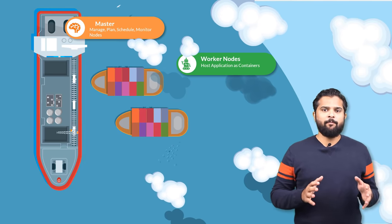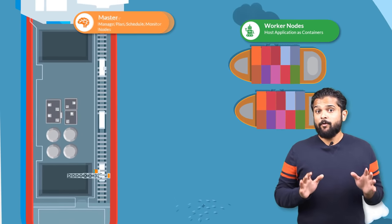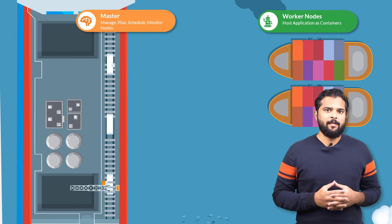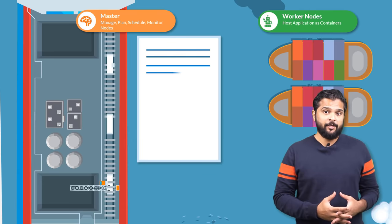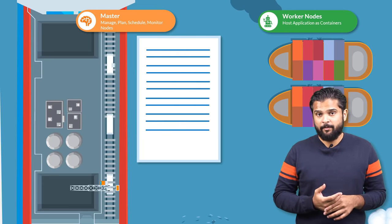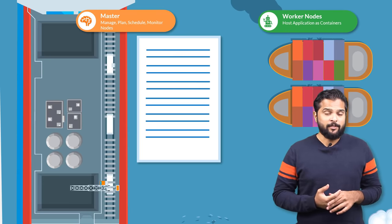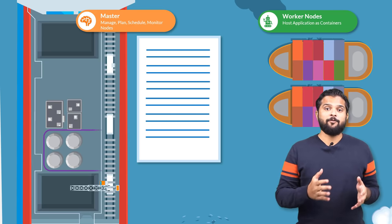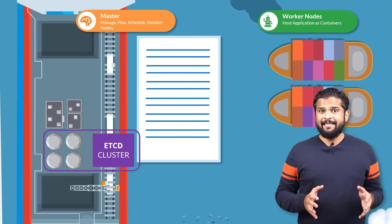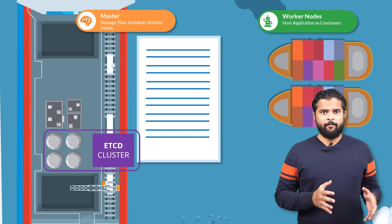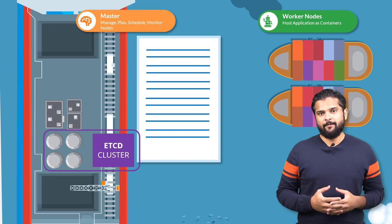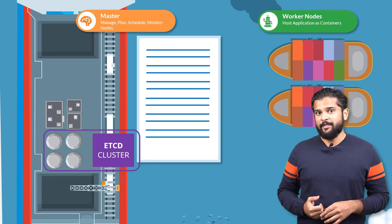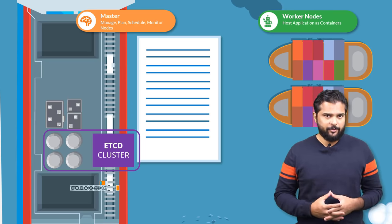We will look at each of these components now. There are many containers being loaded and unloaded from the ships on a daily basis, so you need to maintain information about the different ships — what container is on which ship and what time it was loaded, etc. All of these are stored in a highly available key-value store known as etcd. etcd is a database that stores information in a key-value format. We will look more into what the etcd cluster actually is, what data is stored in it, and how it stores the data in one of the upcoming lectures.